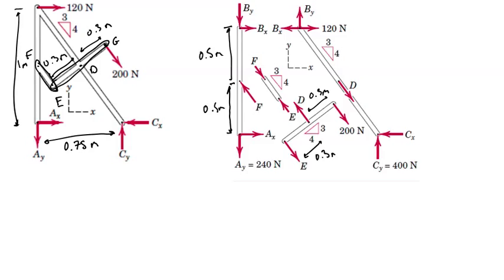In order to solve for the two additional reactions in the X, we'll have to take the system apart further by identifying member FE as a two-force member, since it is pinned at F and E. This can simplify our job. Blowing apart the free body diagram of the entire frame, we have a free body diagram of